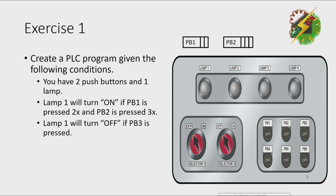Exercise 1. Create a PLC program given the following conditions. You have two push buttons and one lamp. Lamp 1 will turn on if PB1 is pressed two times and PB2 is pressed three times. Lamp 1 will turn off if PB3 is pressed.